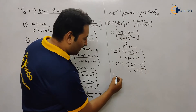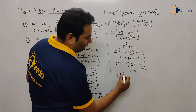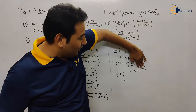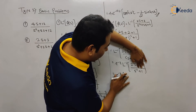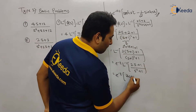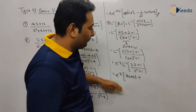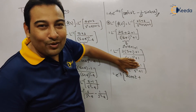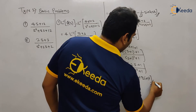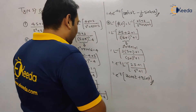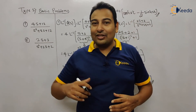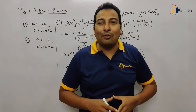So the result is e raised to minus t times: concentrate on 2s upon s squared plus one — the two is a constant, and the inverse Laplace of s upon s squared plus one is cos(t) — plus the inverse Laplace of one upon s squared plus one, which is sin(t). So we are done with problem number eight, and done with the basic problems. Hope you understood — practice well, because this will be very helpful while solving the bigger problems. Thank you.